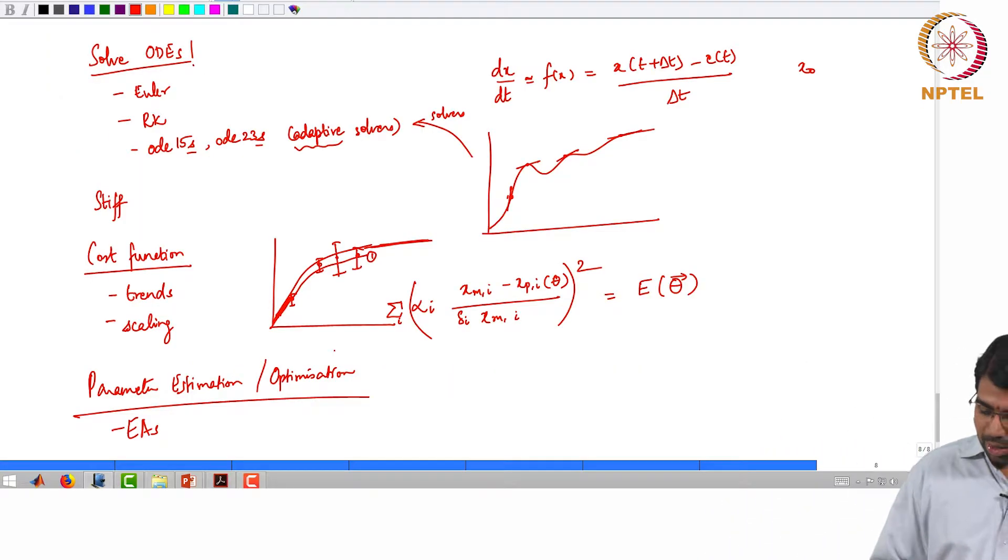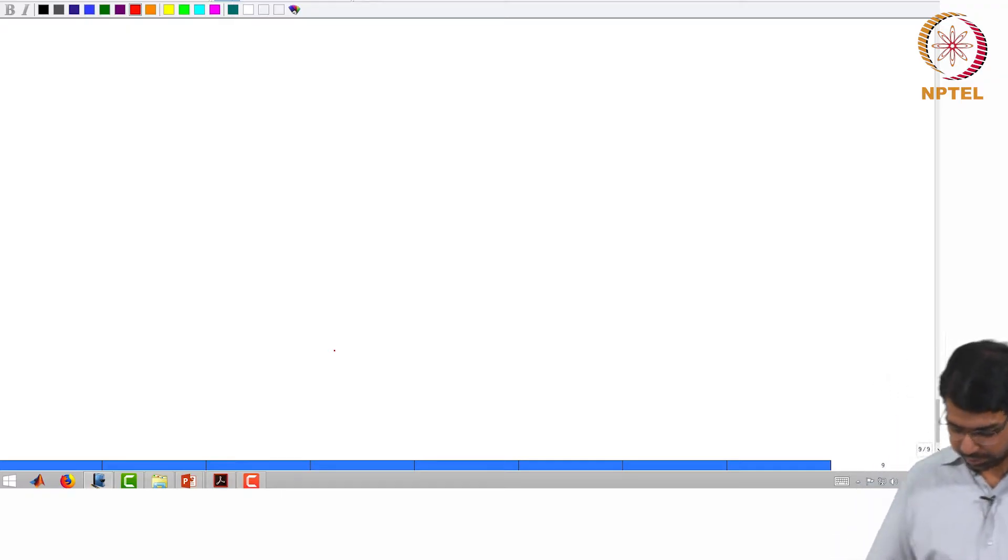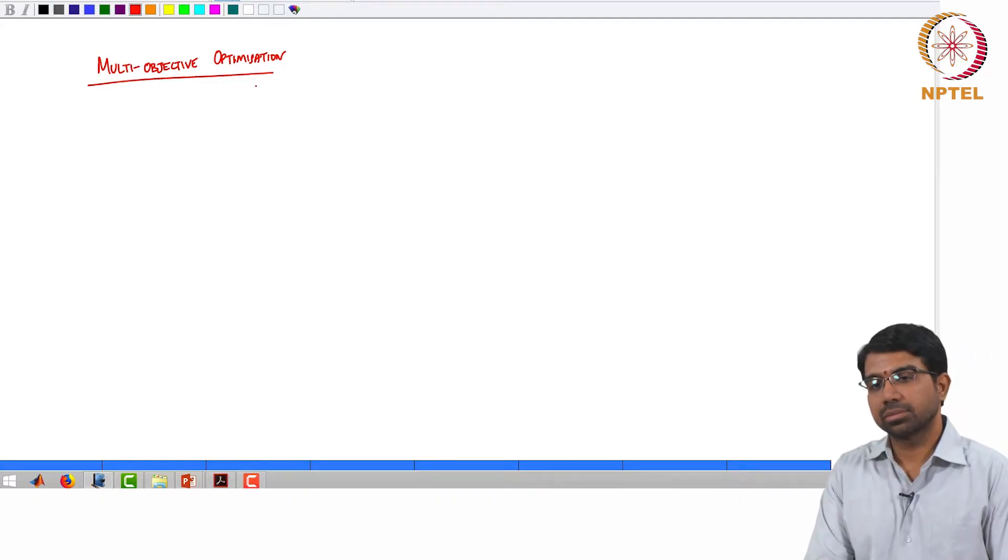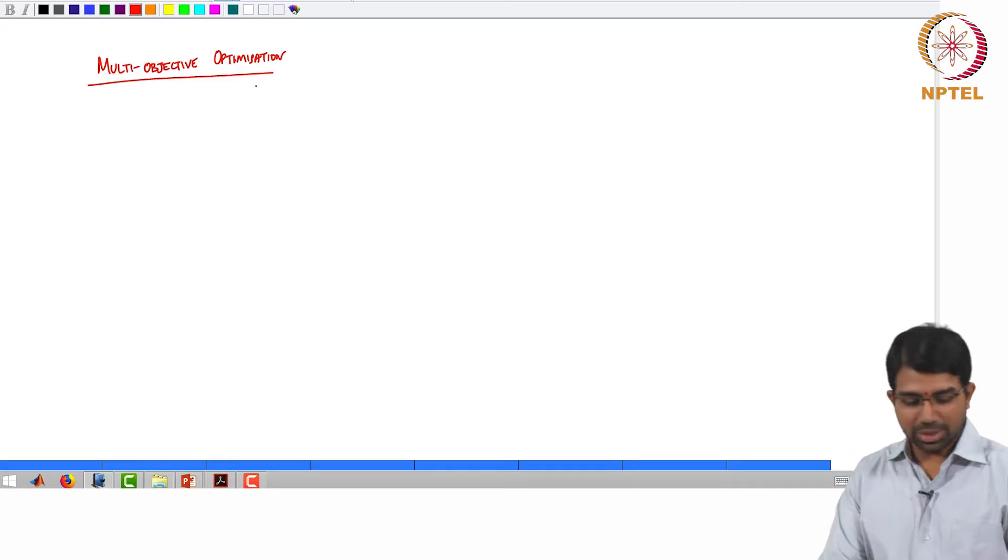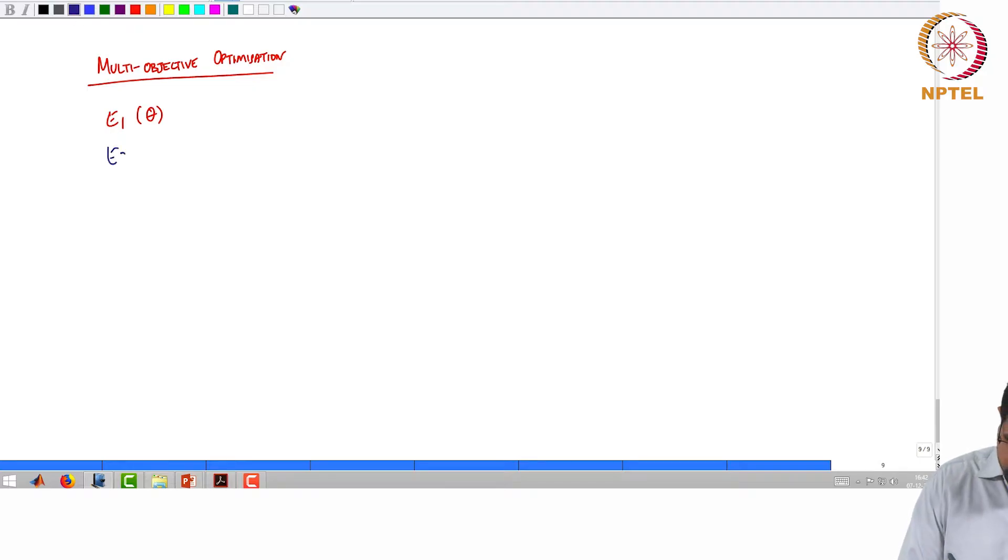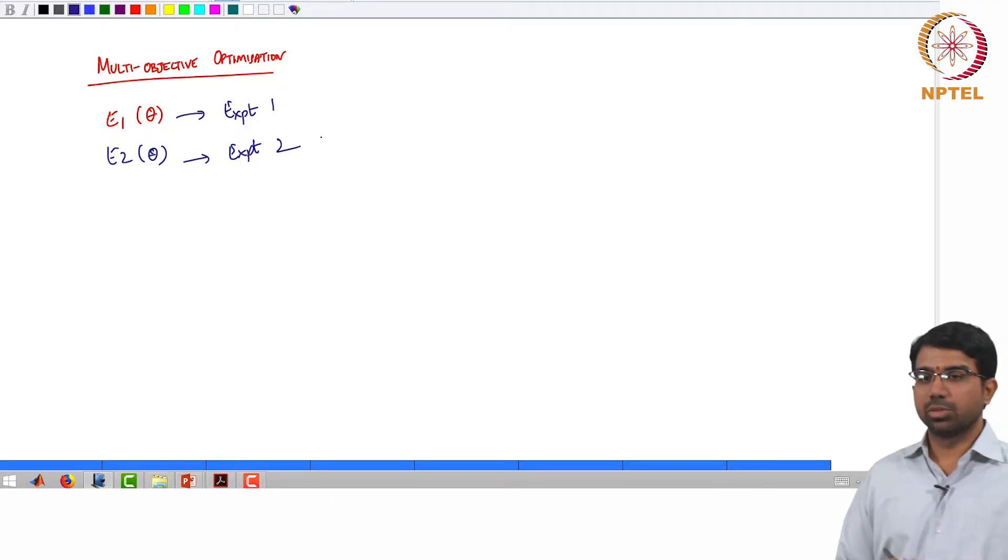A slight detour, what do we mean by multi-objective optimisation? Meaning you have more than one cost function. So you may have E1 of theta and you may have E2 of theta, there are 2 different cost functions. Maybe this comes from experiment 1, this comes from experiment 2.